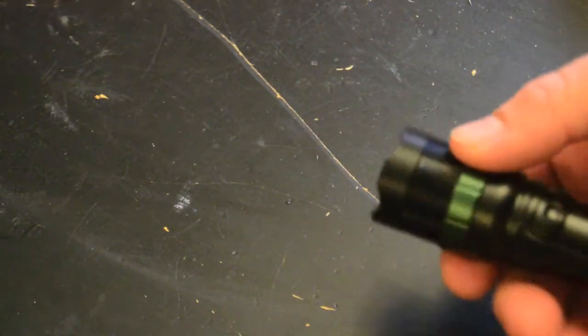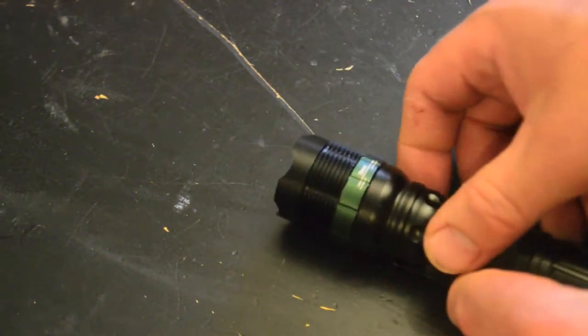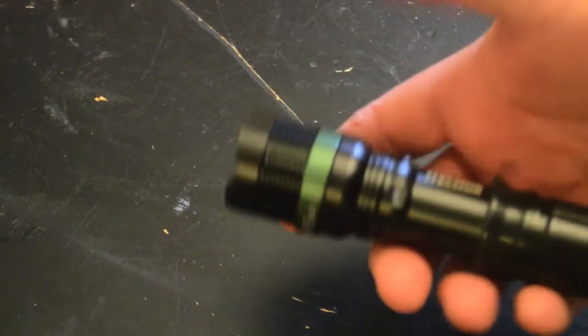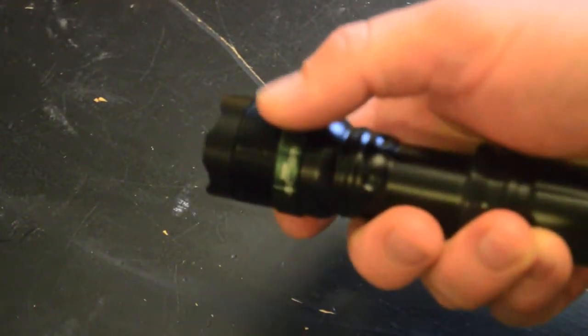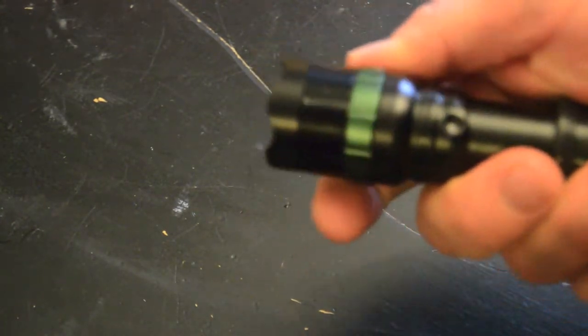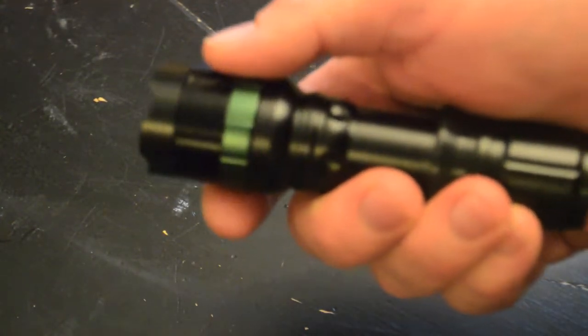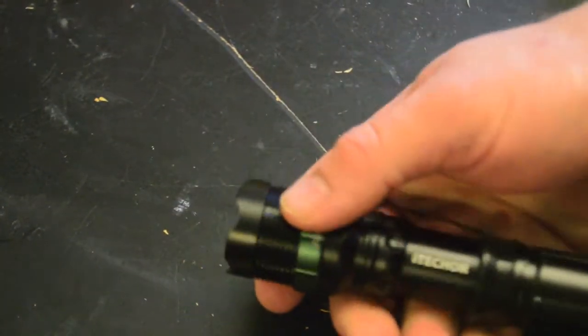And it is zoomable. It's got the zoomable ring, which I like. Now, what I don't like about it is, while this feels pretty sturdy, the zoom ring really doesn't. It feels kind of loose. Not like it's going to fall apart, but it just doesn't have the same feeling of strength that the rest of this flashlight does.